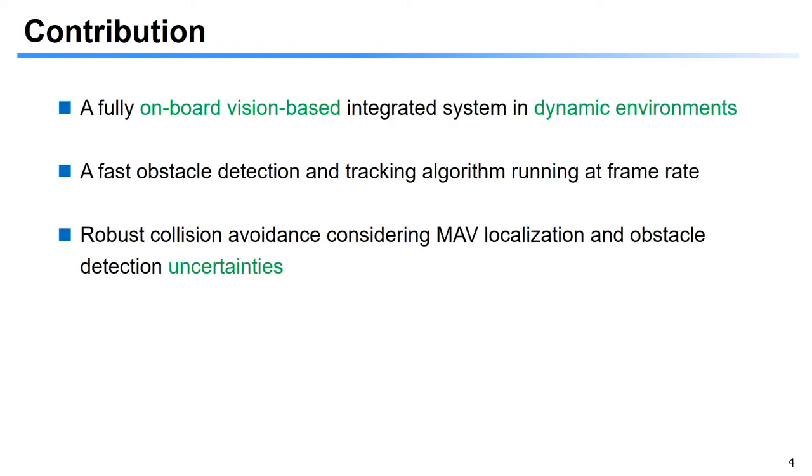Comparing with the state-of-the-art, the main contribution of this paper is an integrated system for MAV collision avoidance in dynamic environments. In our proposed approach, moving obstacles are detected and tracked from onboard depth images, and MAV collision-free trajectories are generated using a chance-constrained model predictive controller, taking into account the MAV localization and obstacle detection uncertainties.